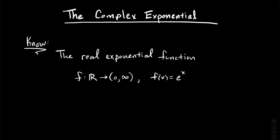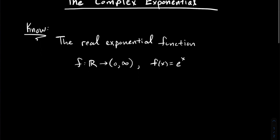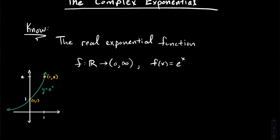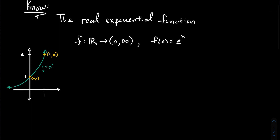We know lots about the real exponential function. So I'll call it f — you input a real number, it outputs a positive real number, and its formula is e to the x. We know from college algebra and calculus what its graph looks like: this green curve with y-intercept at (0,1), and the point (1, e) is on the graph.